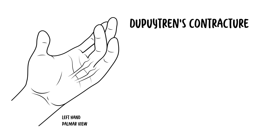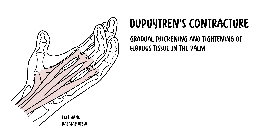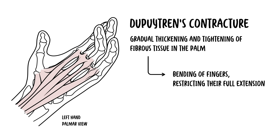Dupuytren's contracture is a progressive hand disorder characterized by gradual thickening and tightening of fibrous tissue in the palm, leading to the bending of one or more fingers towards the palm, restricting their full extension. This condition predominantly affects the ring and little finger and can impair hand function, making everyday tasks challenging.